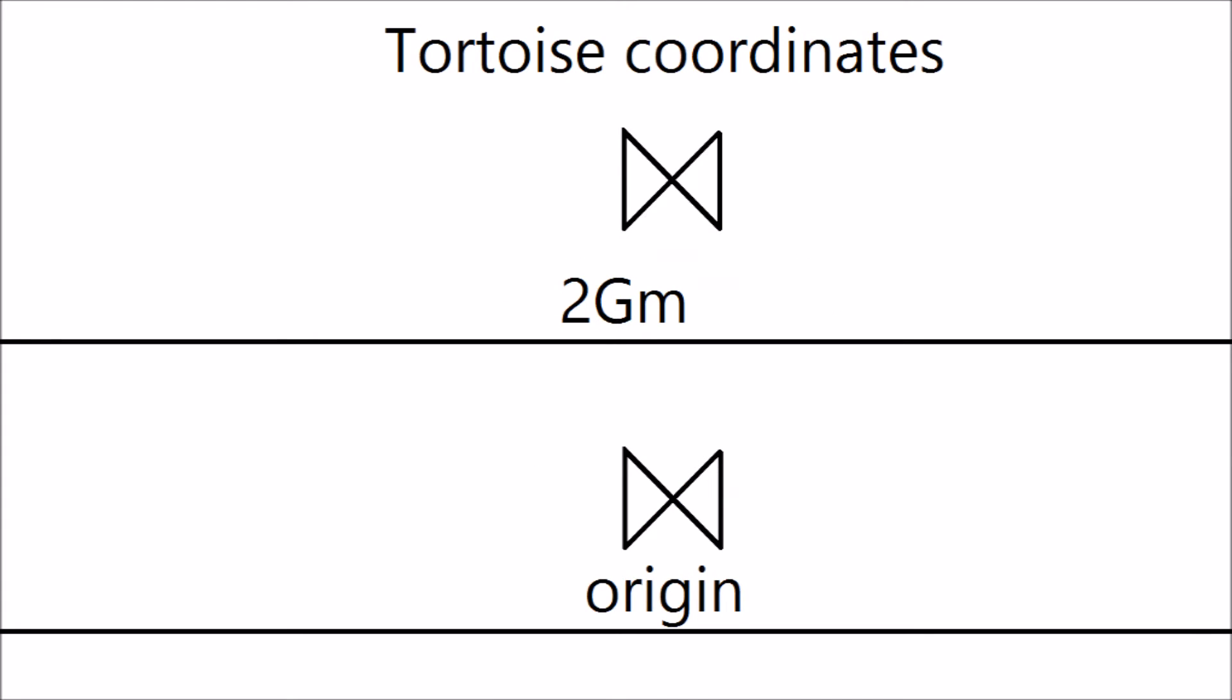According to the tortoise coordinates, above the event horizon are open light cones. Below the event horizon are also open light cones, but a singularity which would close them lies between. What's going on?